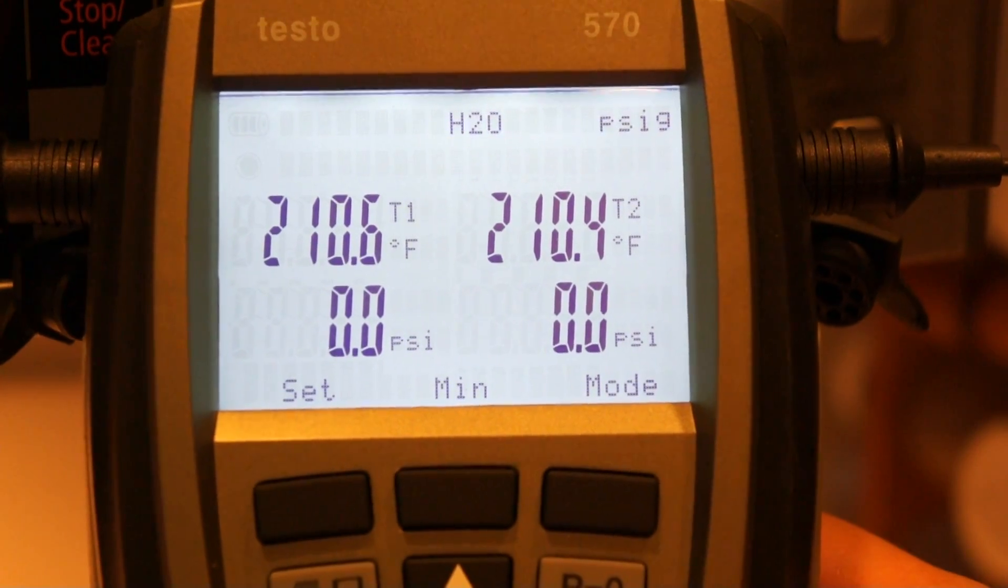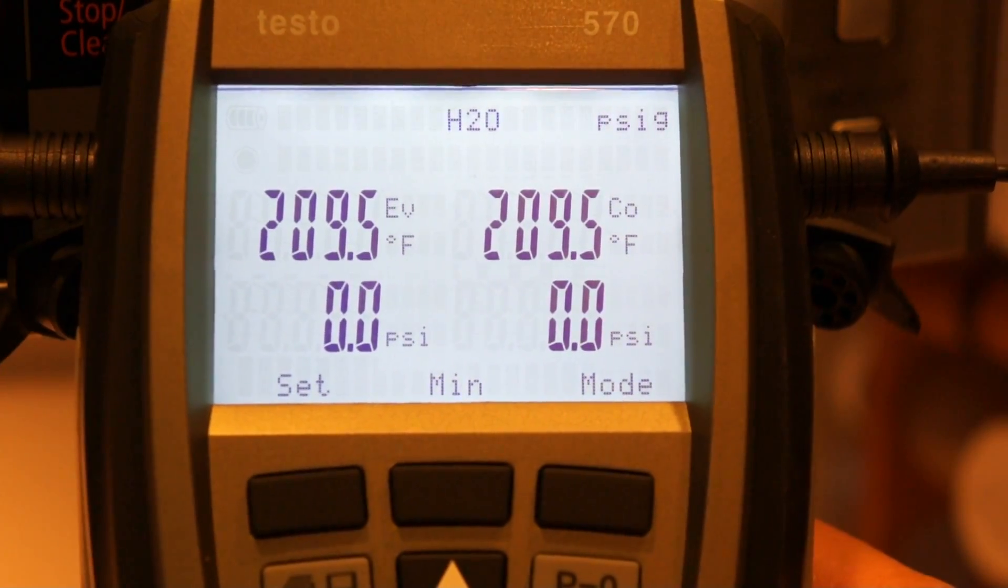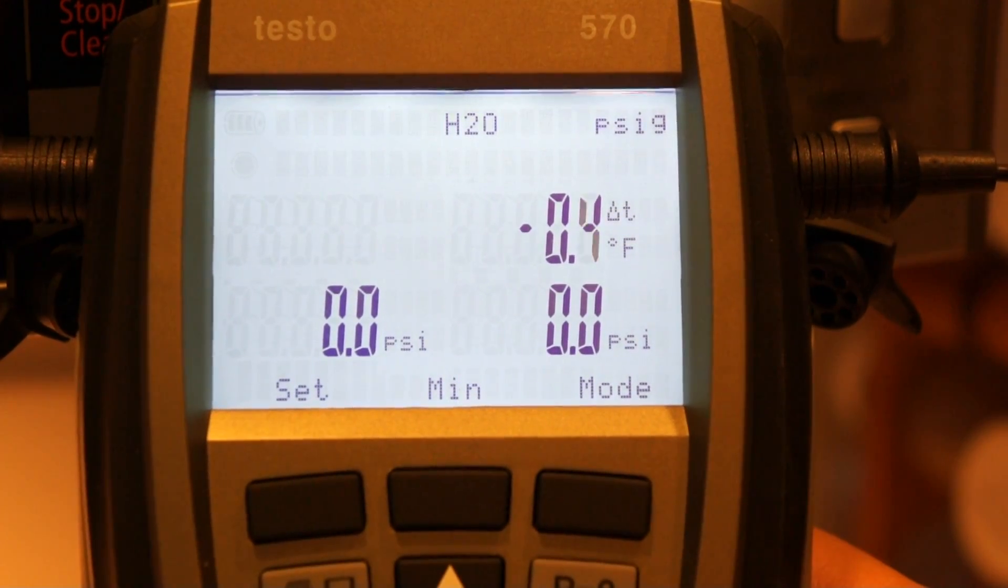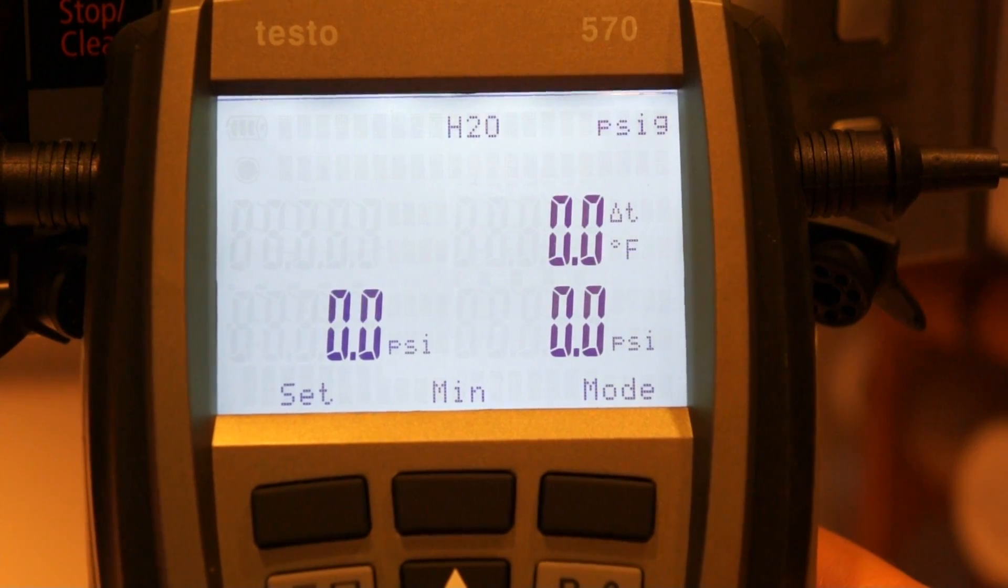So T1 is measuring 210.6, 210.4, and then, etc. Saturation temp, 209.5. And then the temperature difference between the two probes is about two tenths of a degree to zero, somewhere in there.